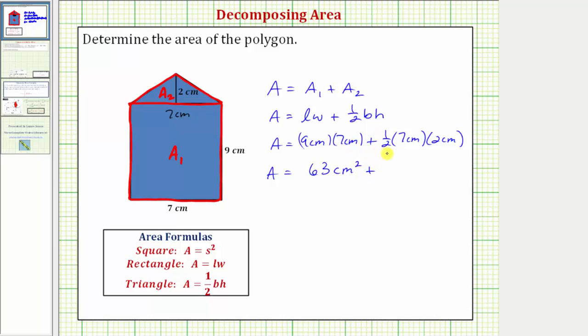And then plus, well one-half times seven would be three-point-five, times two is seven, so the area of the triangle is equal to seven square centimeters.